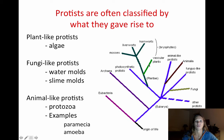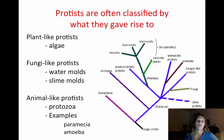We usually classify protists by what they gave rise to. We have our plant-like protists — a good example of those are algae. We have our fungi-like protists — these are water molds and slime molds, which are super cool. And we have our animal-like protists — a protozoa, an amoeba, or a paramecium are good examples of those guys. And again, they plug in right here on the cladogram.